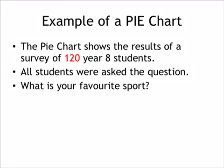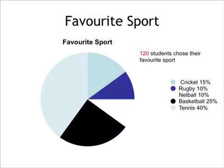In this lesson we are continuing with pie charts. In this example I surveyed 120 year age students and they were asked the question what is your favorite sport? After the survey was done the information was put into this pie chart.